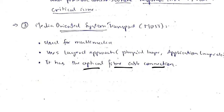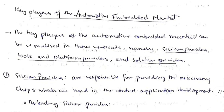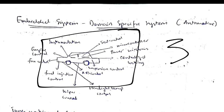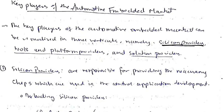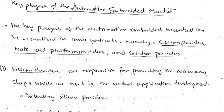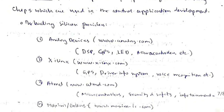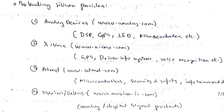The automotive embedded system ecosystem is divided into three parts. First are silicon providers — companies that provide the microcontrollers and microprocessors. Second are tools and platform providers. Third are solution providers. Silicon providers supply the chips used in control application development; for example, Analog Devices provides DSP (digital signal processing), GPS, LED, and microcontrollers.